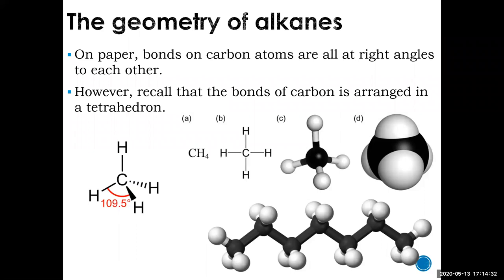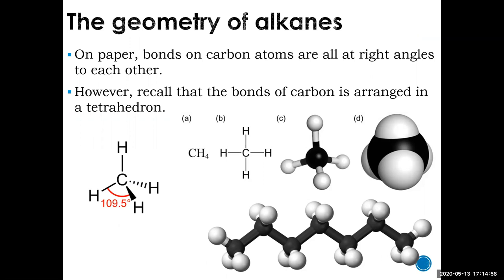A student asks: how did you know the bottom model was heptane? The answer: by counting the number of carbons. The black balls represent carbon and the white ones represent hydrogen — that's the convention. Counting seven black balls connected to each other gives seven carbons, so it must be heptane.